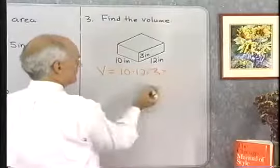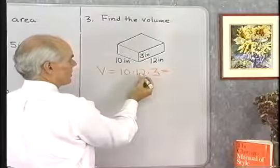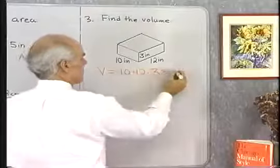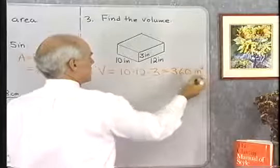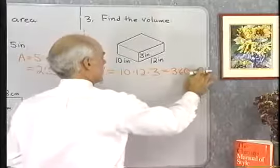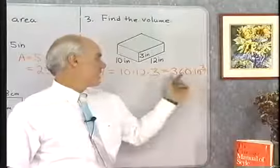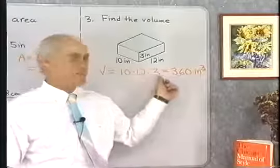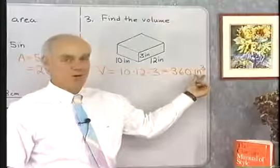So what do I have here? 10 times 12 times 3. 3 times 12 is 36 times 10 is 360. And that will be cubic inches because I have inches times inches times inches, that's going to give me cubic inches. And that is a measure of volume or capacity.